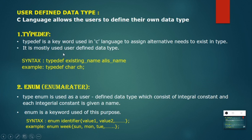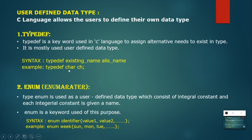The syntax for typedef is: typedef space existing_name space alias_name. For example, typedef char ch — now 'ch' is an alias for char. So I can declare any variable using ch without needing to write char. This is how typedef is used to give an alternative name for an existing data type.